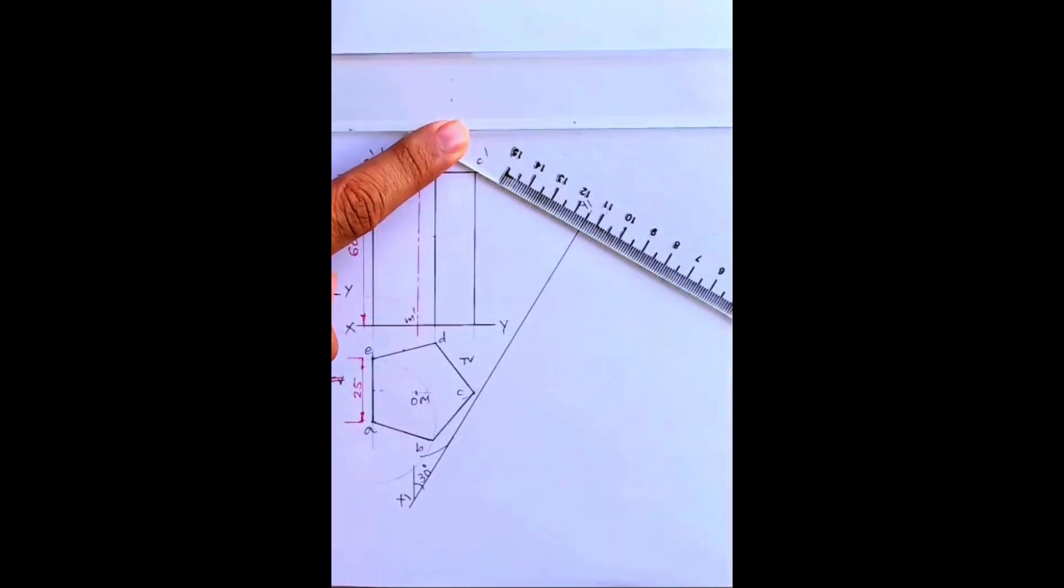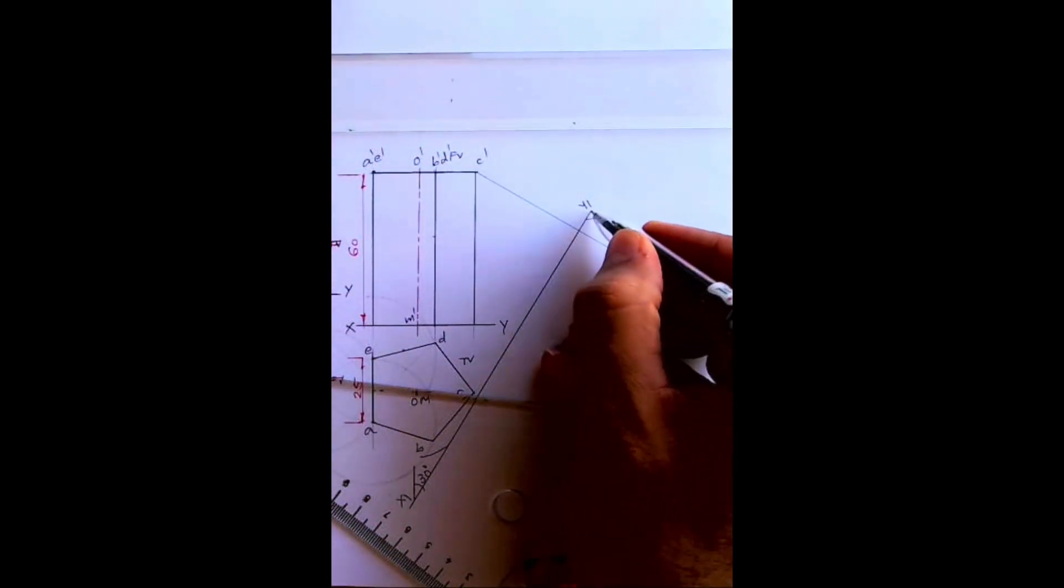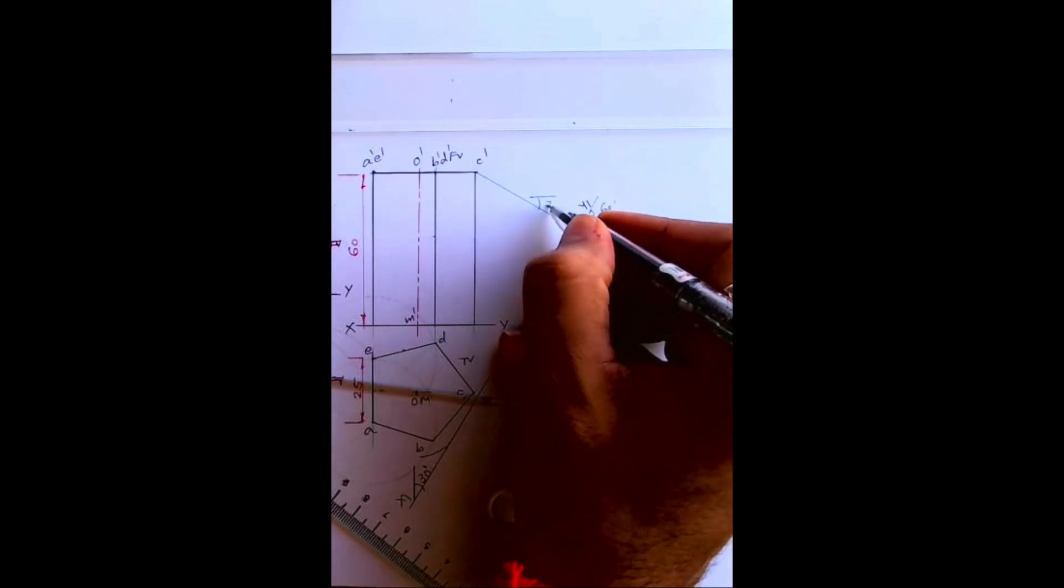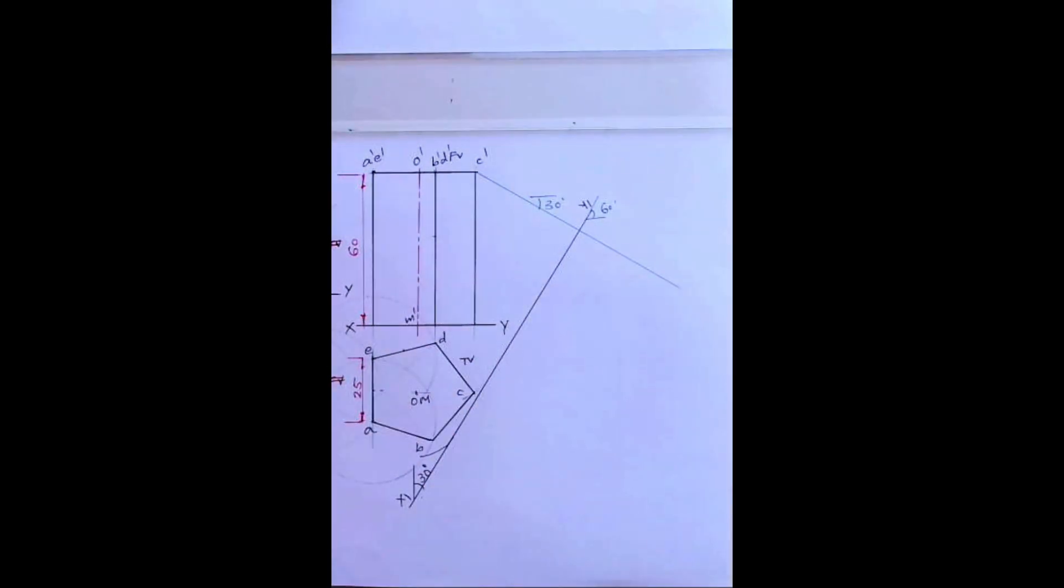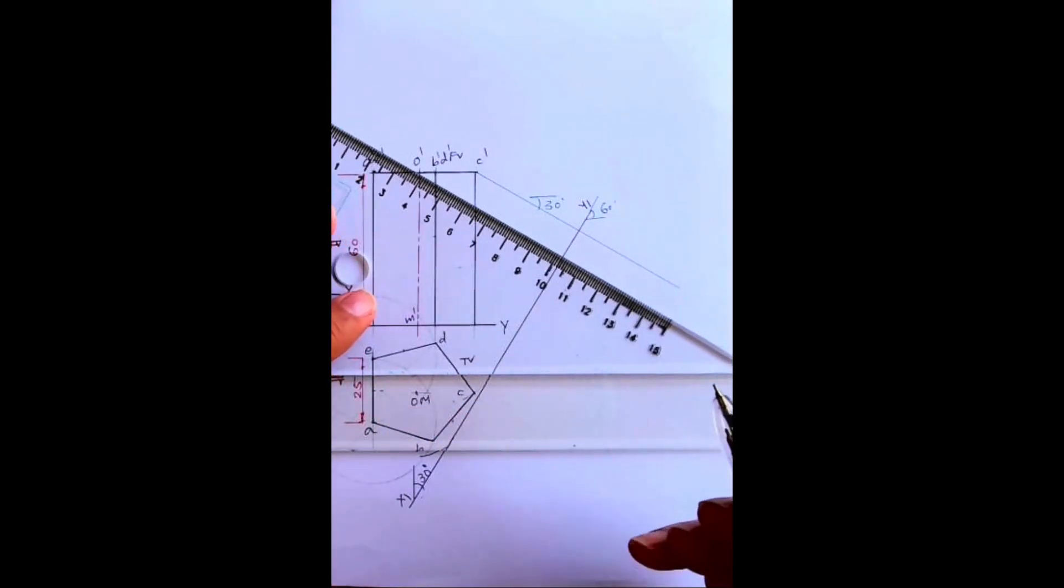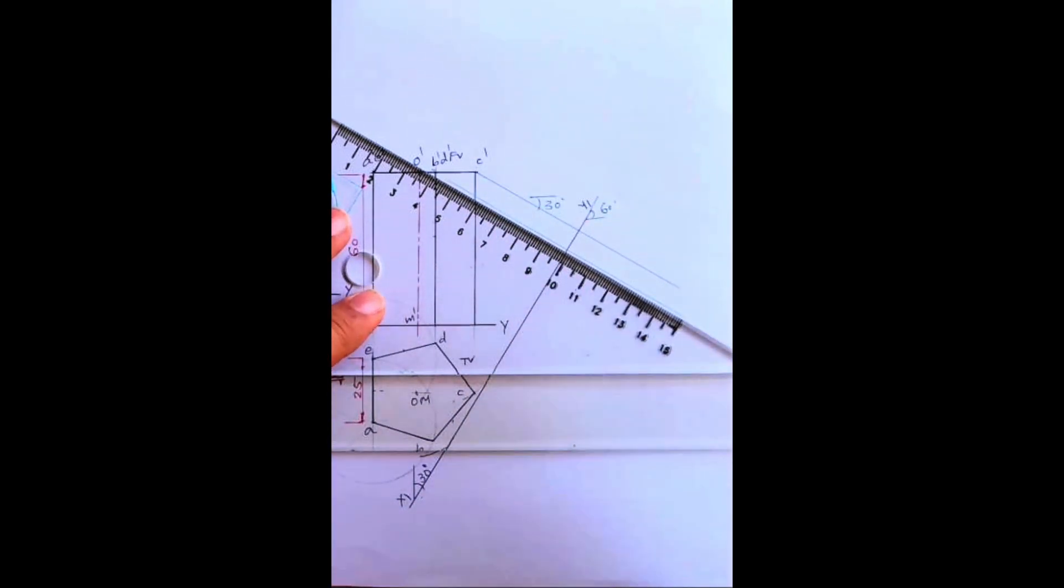Now what is the angle? If you see, the auxiliary plane is inclined 60 degrees to horizontal, so this line will be 30 degrees. Always remember it will be 90 degrees. So you take lines like this at 30 degrees with the horizontal.